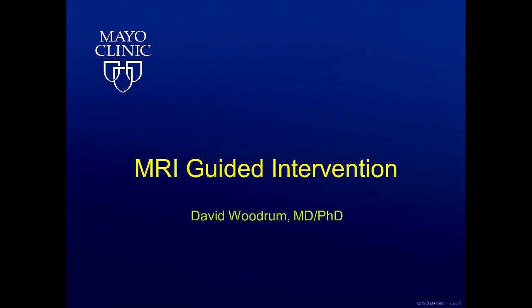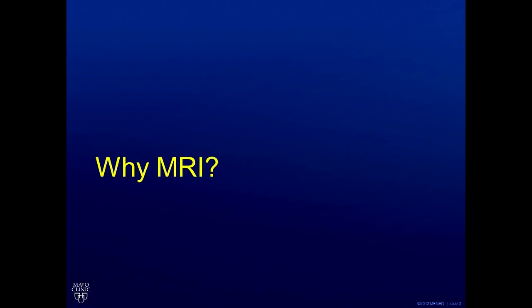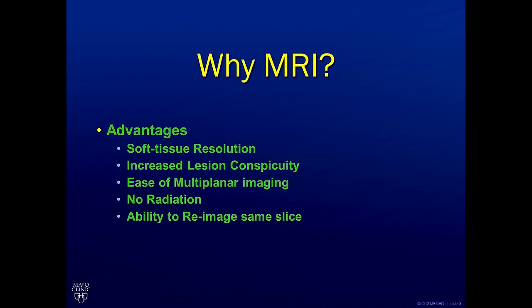Hello. It's my pleasure today to talk to you about MR-Guided Intervention. Why do we want to use MR for intervention or procedures? MR offers a unique advantage of imaging soft tissue in ways that other imaging platforms cannot. We can see the lesions better so that we can see the tumors. We can also image these tumors in any plane we want or need. There are no radiation aspects to MR imaging, and this allows us to re-image in the same plane or multiple planes as many times as we need to.